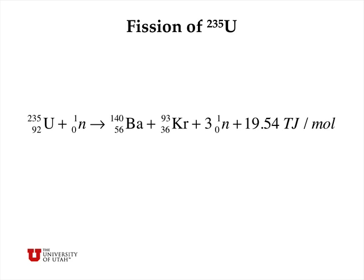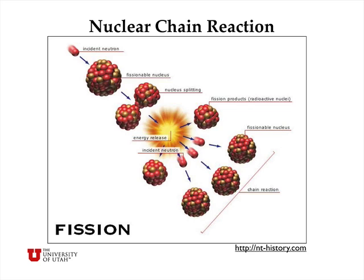Let's look at the fission of U-235. Uranium-235 can absorb a thermal neutron and undergoes spontaneous fission to a barium atom, a krypton atom, and three neutrons, releasing nearly 20 terajoules per mole of energy—a terajoule being 10 to the 9th kilojoules. Because you get three neutrons in the products where you only used one as a reactant, this fission can carry out a nuclear chain reaction where one event releases three additional neutrons, each of which can cause additional fission events, so the reaction can grow geometrically very quickly.